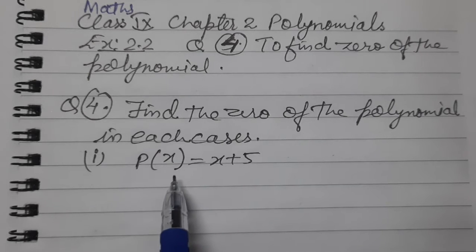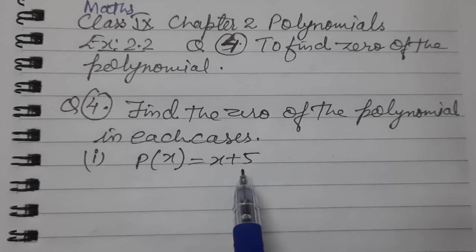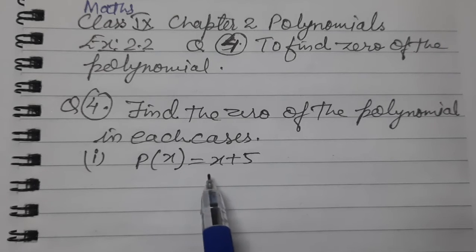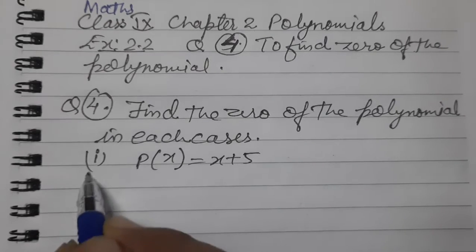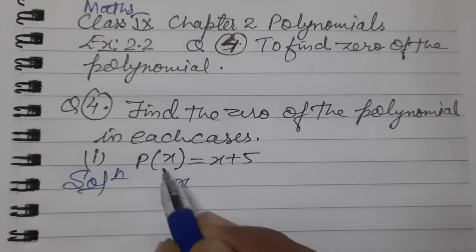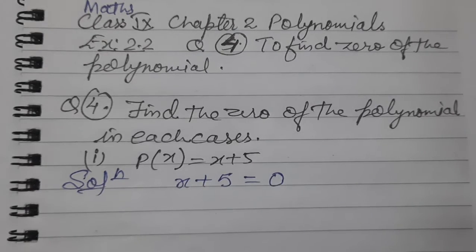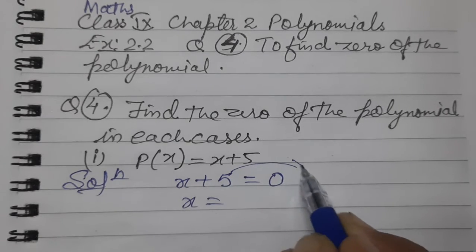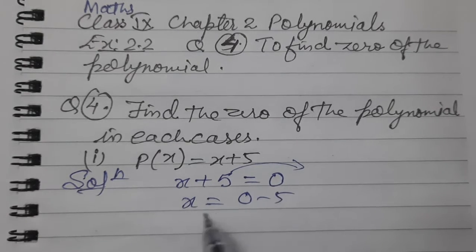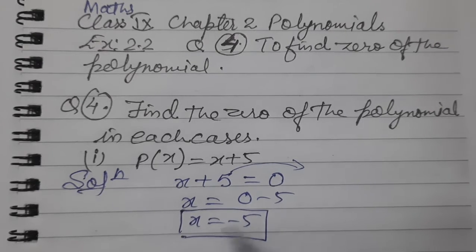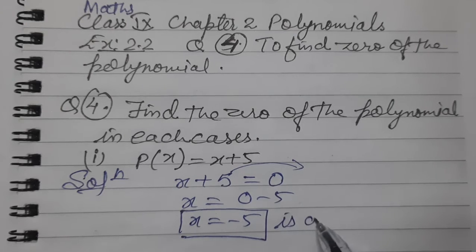So children, this is the polynomial given to us. We need to find its zero. If you have to find the zero of any polynomial, first equate the polynomial to zero. So let's start the solution. We put P(x) equal to zero: x plus 5 equals zero. Now it's very easy. Transpose 5 to the other side: zero minus 5 equals minus 5. So x equals minus 5. This is the zero of the polynomial.